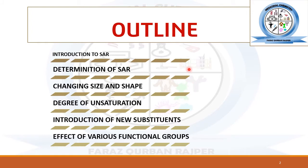The outline for this lecture includes: structure-activity relationship, how SAR can be determined, different techniques like changing the size and shape of a drug molecule, degree of unsaturation present in a drug molecule, introduction of new substituents or new functional groups, and the effect of various functional groups on the different biological activities of a drug molecule.